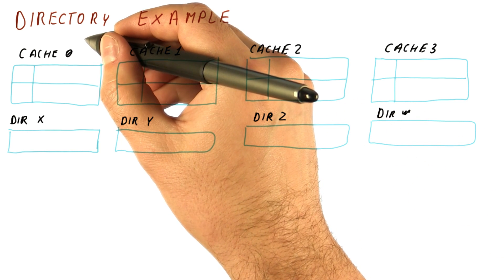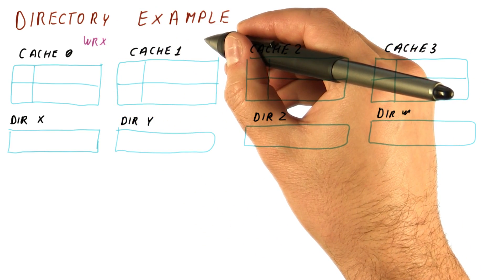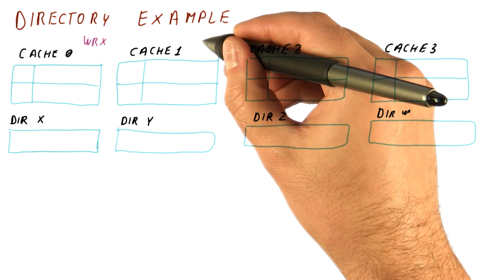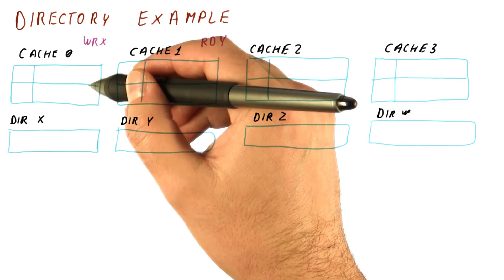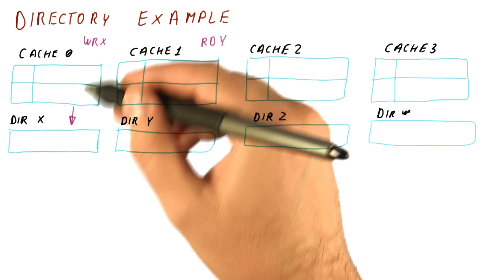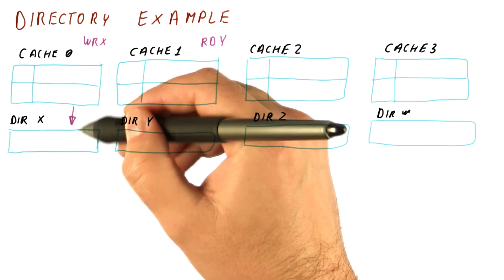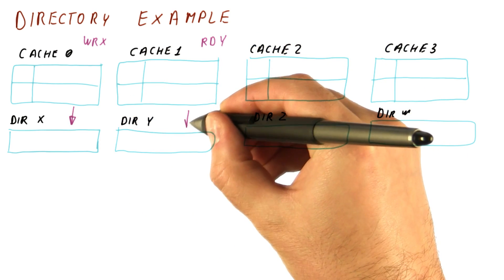And now let's assume that core zero writes x at about the same time where core one is trying to read y. This is a cache miss, and we send the request to the directory that is the home for x, which happens to be our own nearby slice of the directory. When we read y, we go to our own slice.